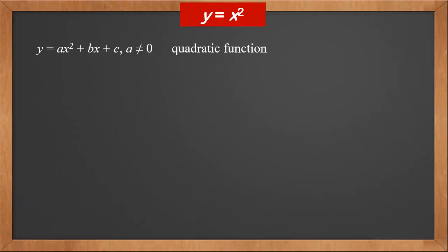A quadratic function is ax squared plus bx plus c, where a is not zero. The highest power of x is 2.